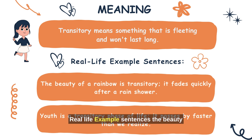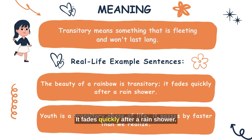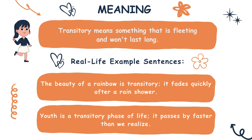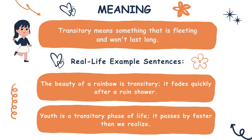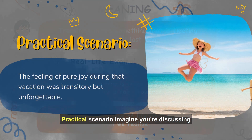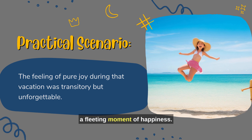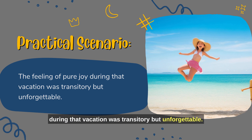Real-life example sentences: The beauty of a rainbow is transitory — it fades quickly after a rain shower. Youth is a transitory phase of life; it passes by faster than we realize. Practical scenario: imagine you're discussing a fleeting moment of happiness. You might say, 'The feeling of pure joy during that vacation was transitory, but unforgettable.'